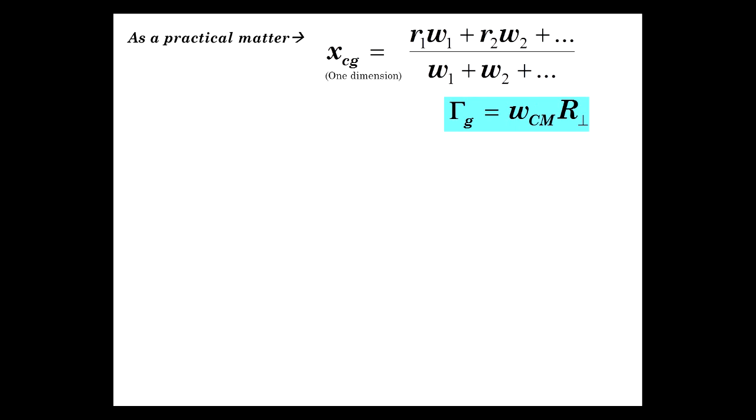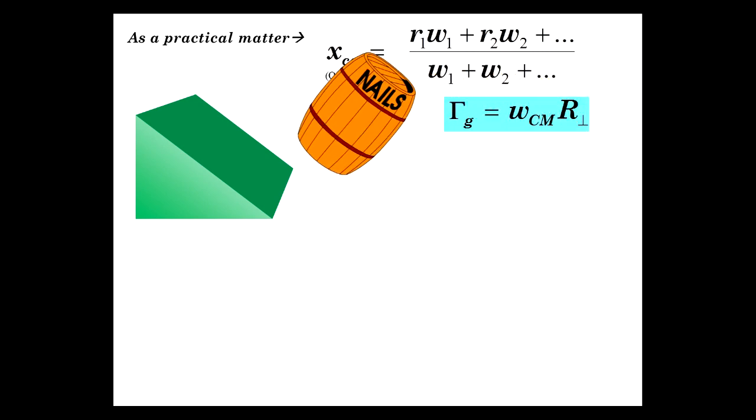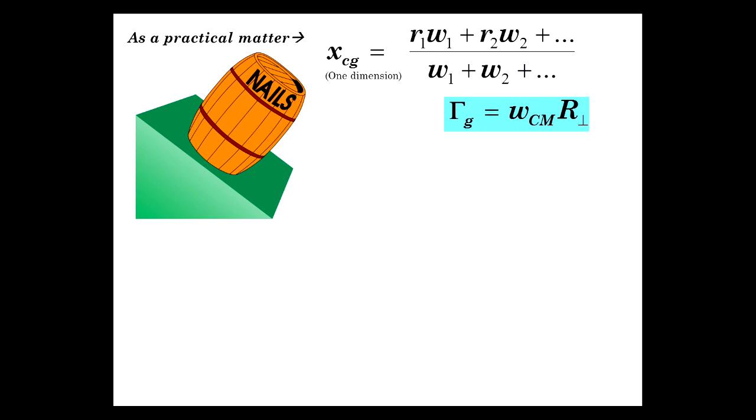Now, as a practical matter, we're usually worried about torque in one dimension. So x center of gravity, in that case, is just the sum of all the positions times the weights over the sum of all the weights. So torque from gravity is weight from the center of mass because G is assumed constant times the perpendicular radius. Now, here's a platform, inclined plane, and we want to do the following. It's time to bring out a keg of nails. Yes, you heard me right. And stick it on an inclined plane where there's no sliding or slipping. But there may, in fact, be tipping.